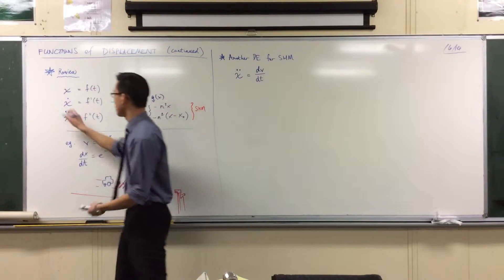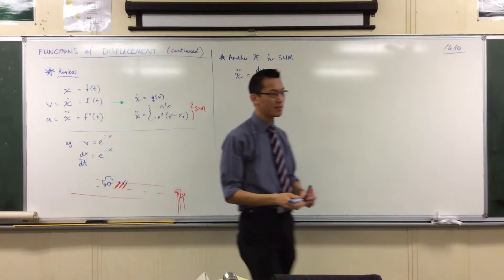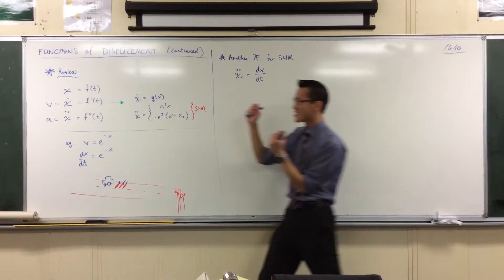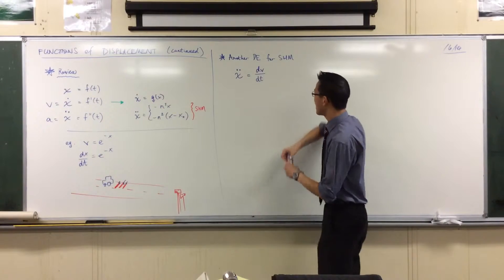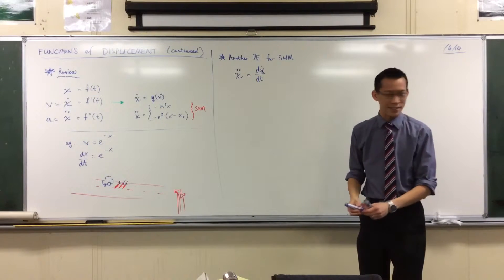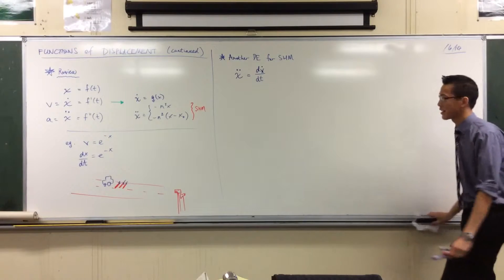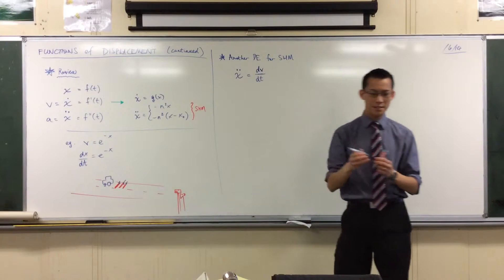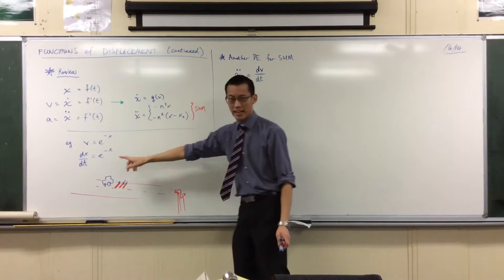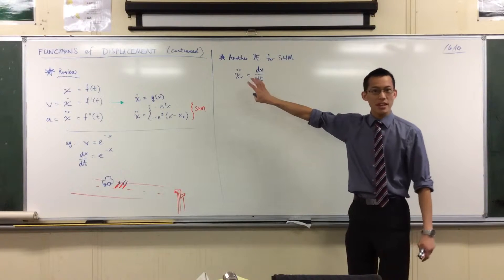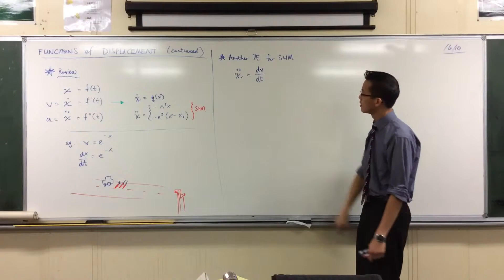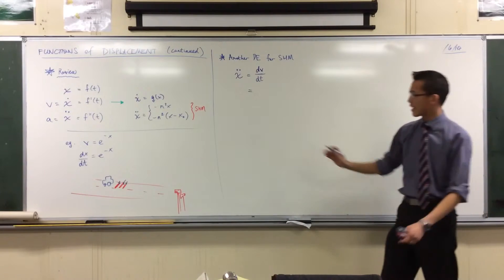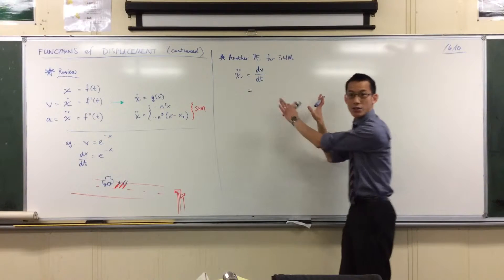An alternative way to write it is to call this v for velocity and this a for acceleration. This mixes up the two schemes, which is frustrating — it's like, just use one scheme or the other. So what we've got is dv/dt. I'm going to use the same chain rule trick but in reverse. I want to think about this in terms of x.